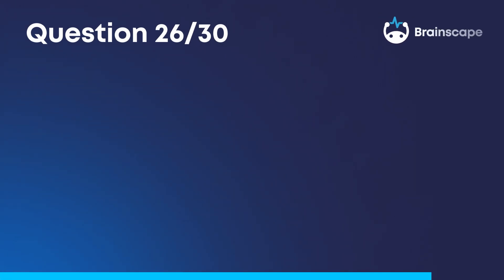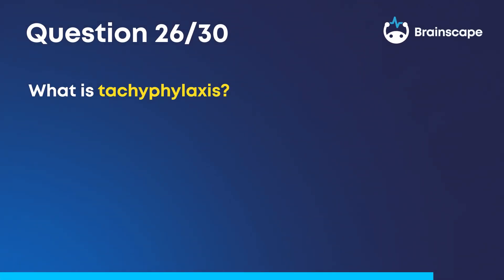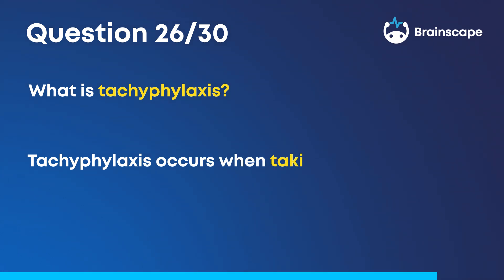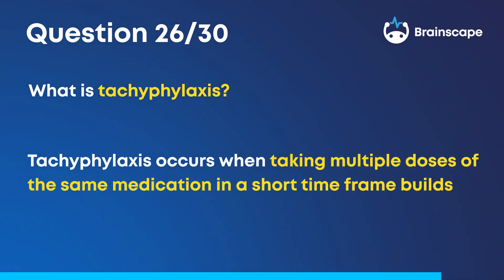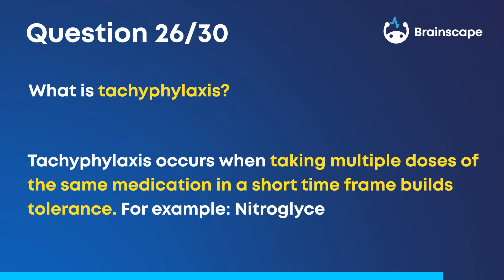Question 26. What is tachyphylaxis? Tachyphylaxis occurs when taking multiple doses of the same medication in a short time frame builds tolerance. For example, nitroglycerin.